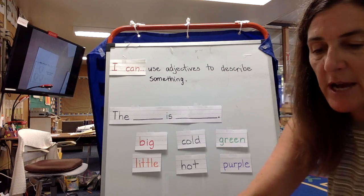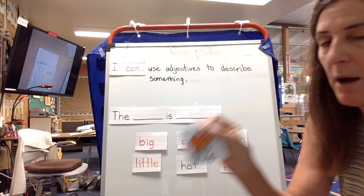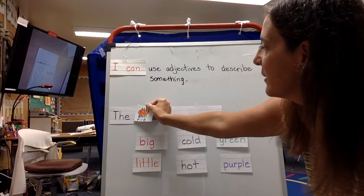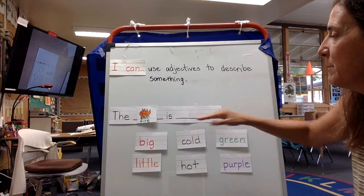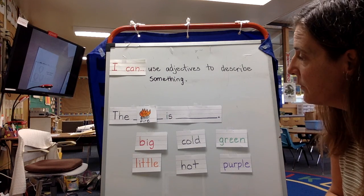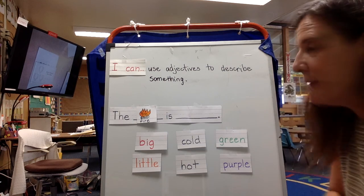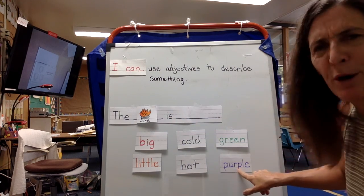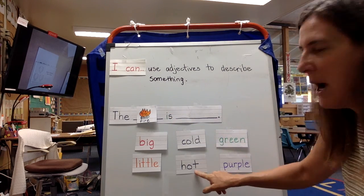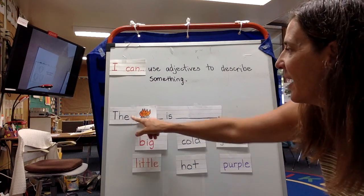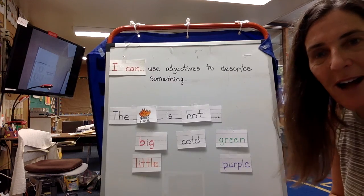Let me try another one. What's another picture I have here? How about fire? The fire is blank. It's kind of a big fire — I could put the fire is big. Is the fire purple? No. How about hot? The fire is hot. Sure, I can do that.